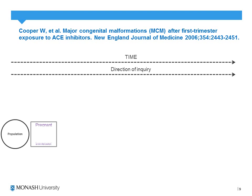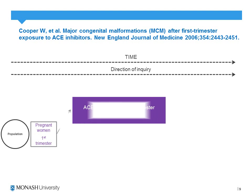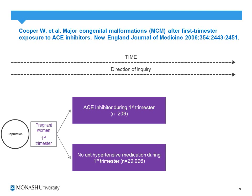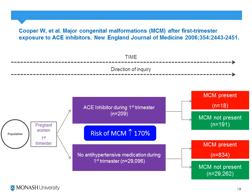The direction of enquiry was prospective. The sample was pregnant women in their first trimester. Investigators identified patients exposed to the risk factor — those taking ACE inhibitors during their first trimester — and compared them to women within the same sample who were not taking antihypertensive medication during that trimester. Following up post-birth, investigators identified that the risk of a major congenital malformation increased by 170% in women taking ACE inhibitors during that period.